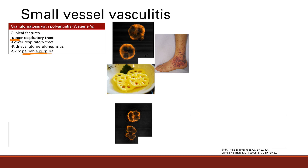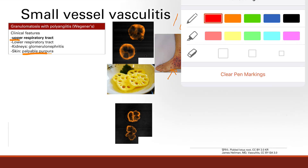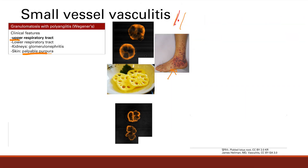Skin involvement produces palpable purpura. Palpable purpura is raised, non-blanching red lesions caused by hemorrhage — red blood cells leak out of blood vessels. A blanching lesion turns white when you press it, but purpura remains red because the blood is outside the vessel — pressing it doesn't move it away.